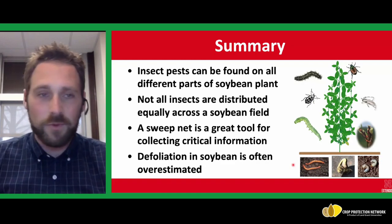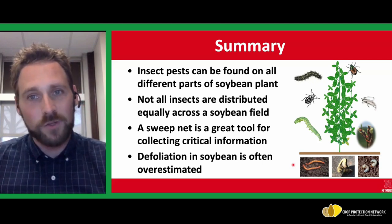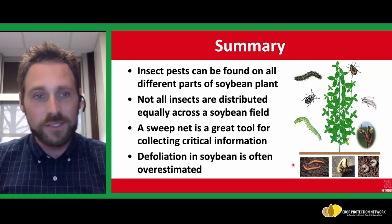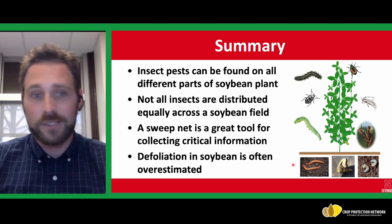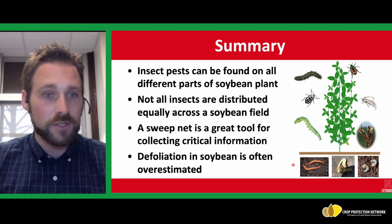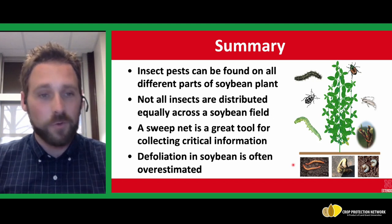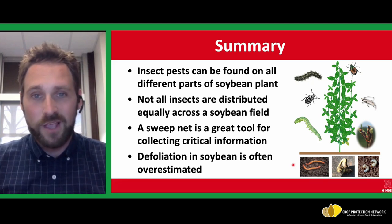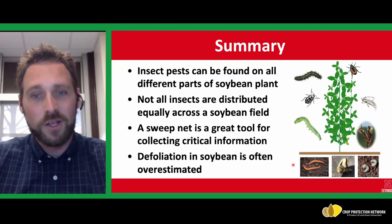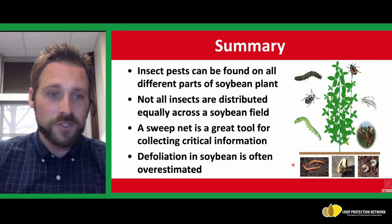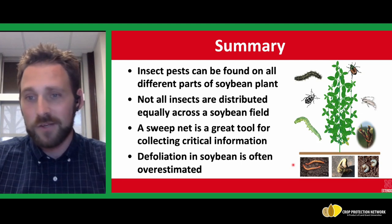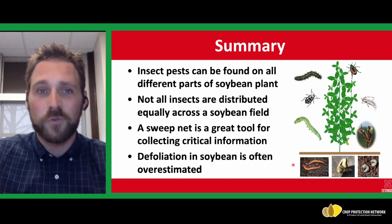To summarize: insects can be found on all different parts of a soybean plant — Japanese beetles and thistle caterpillars up near the top, other insects ranging throughout the canopy, soybean gall midge near the base, and early in the season below ground insects depending on weather conditions. A sweep net is a great tool to have in the field. A number of these insects are good examples of edge infesting pests, so if you stick along the edge and don't walk out of the field, you can get a very different picture — it's important to walk those fields. Defoliation in soybeans is often overestimated, so use that Crop Protection Network tool to set yourself up for good defoliation estimates during the summer.